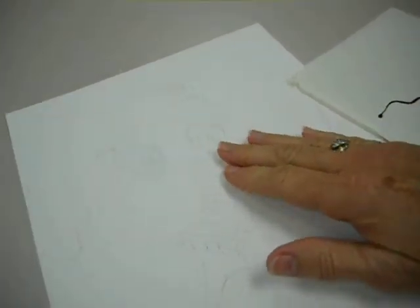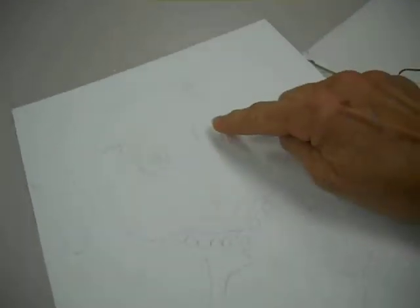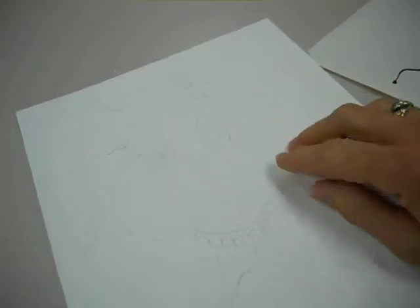Alright, today what you're going to do is outline your image that you drew with pencil very lightly. You're going to outline it with black glue.